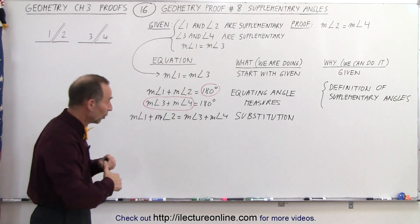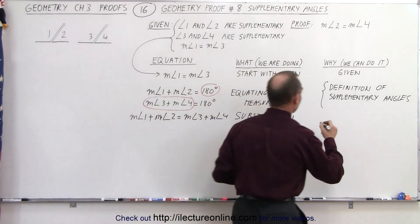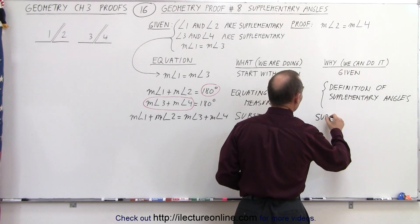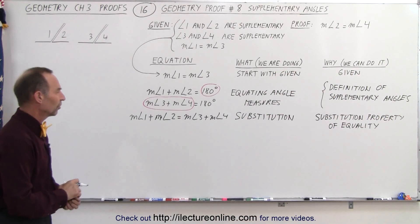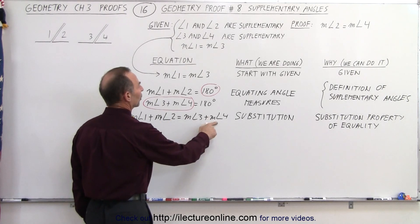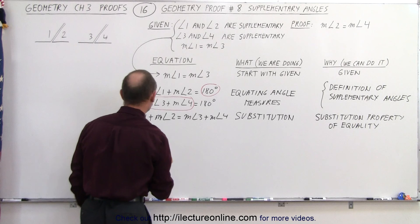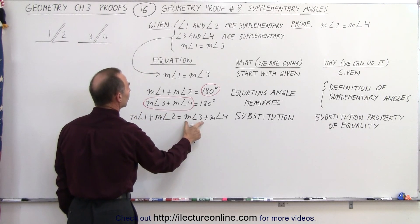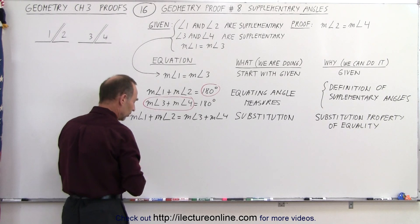We substituted 180 degrees for the sum because both expressions equal 180 degrees — this is justified by the substitution property of equality. Notice we want to equate measure of angle 2 to measure of angle 4, and we also know the measure of angle 1 equals the measure of angle 3, so we can make another substitution.